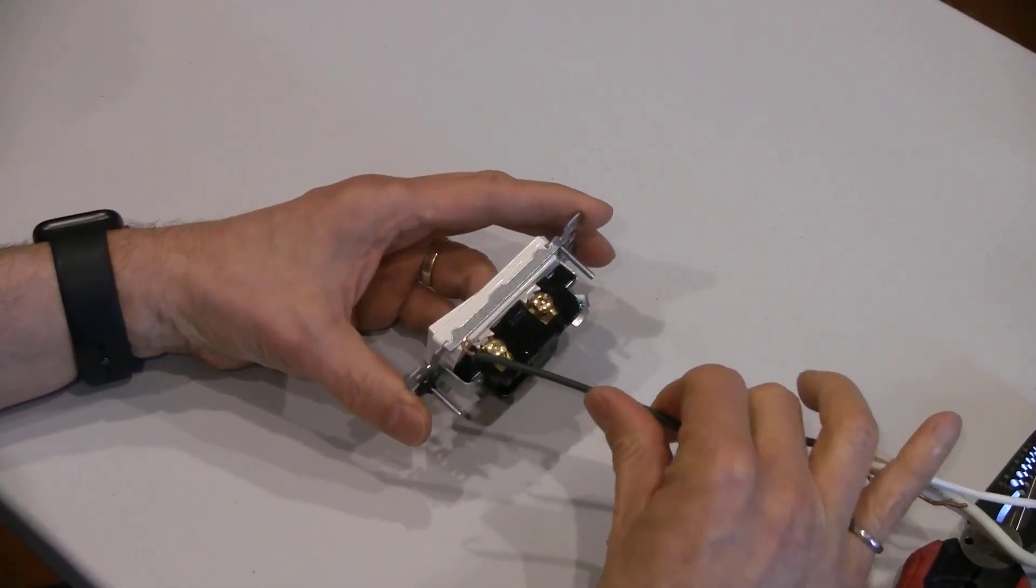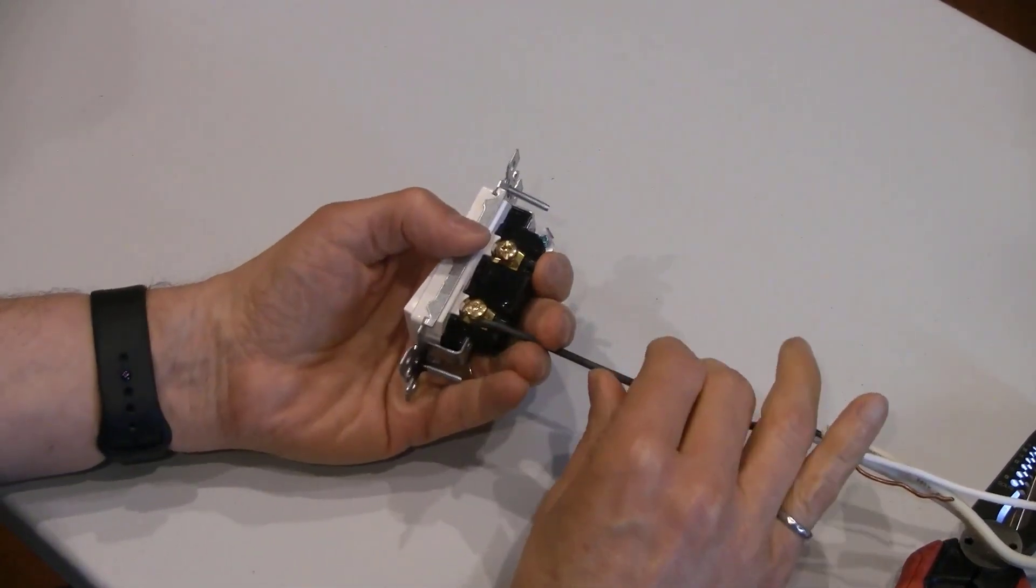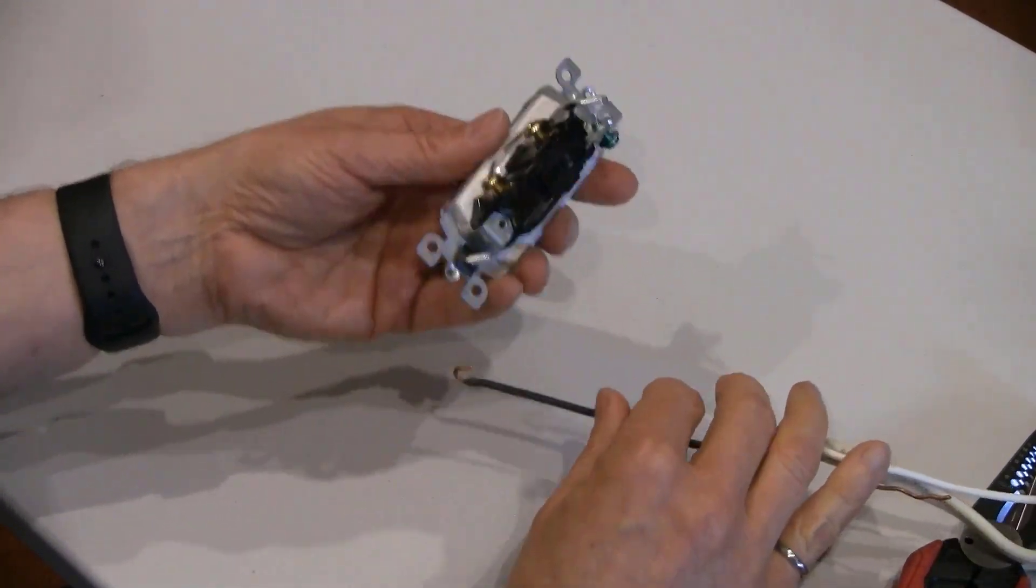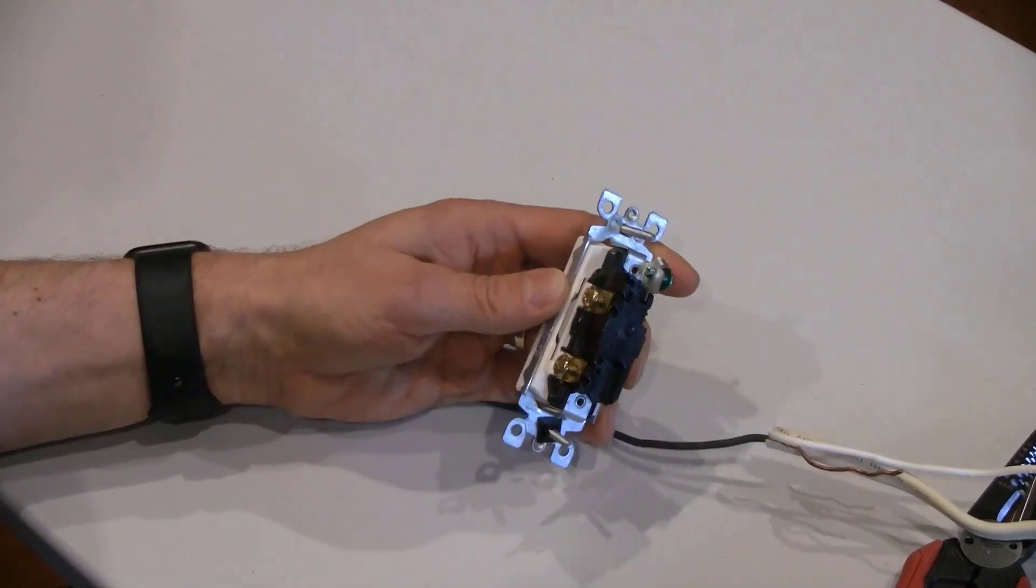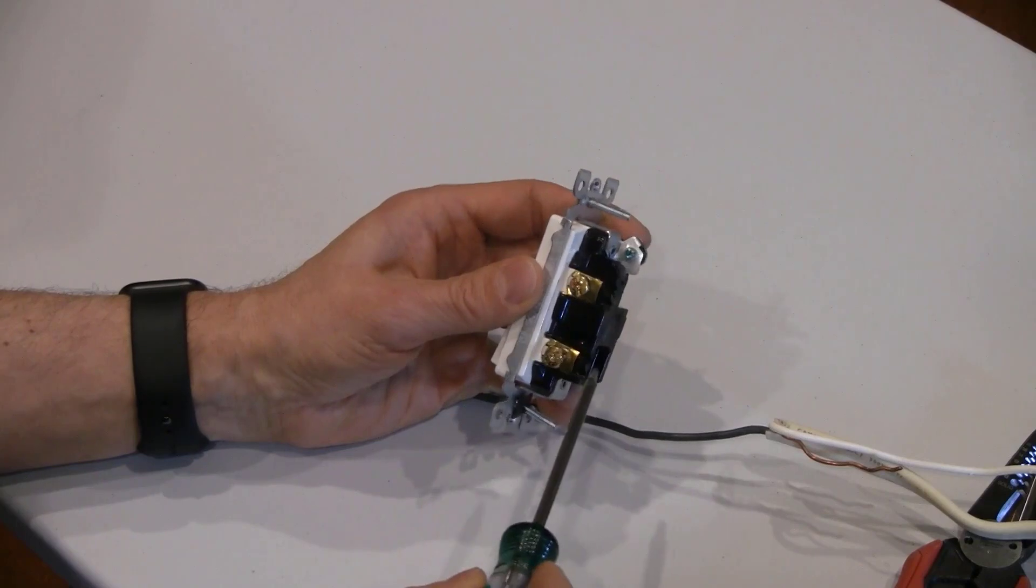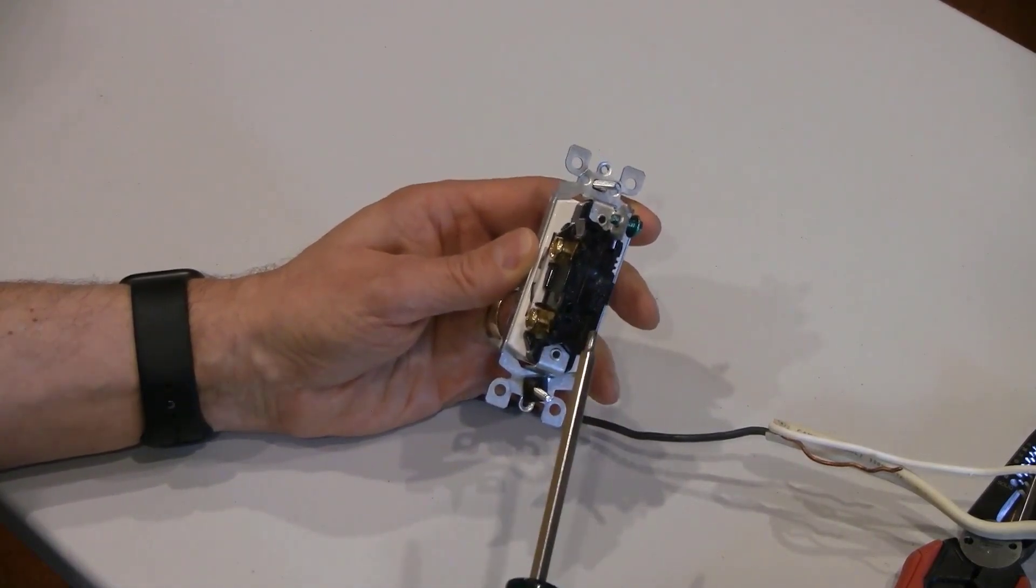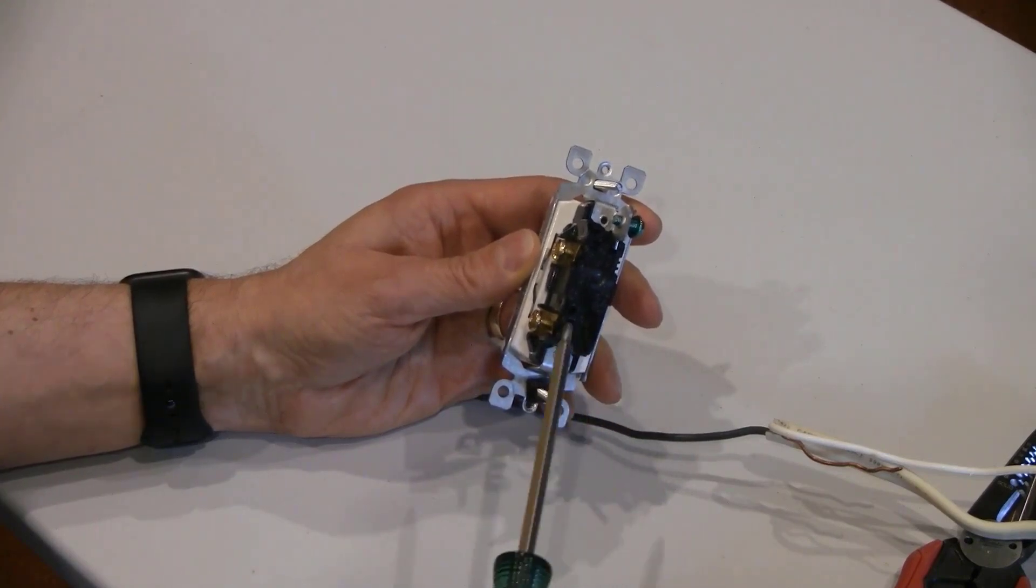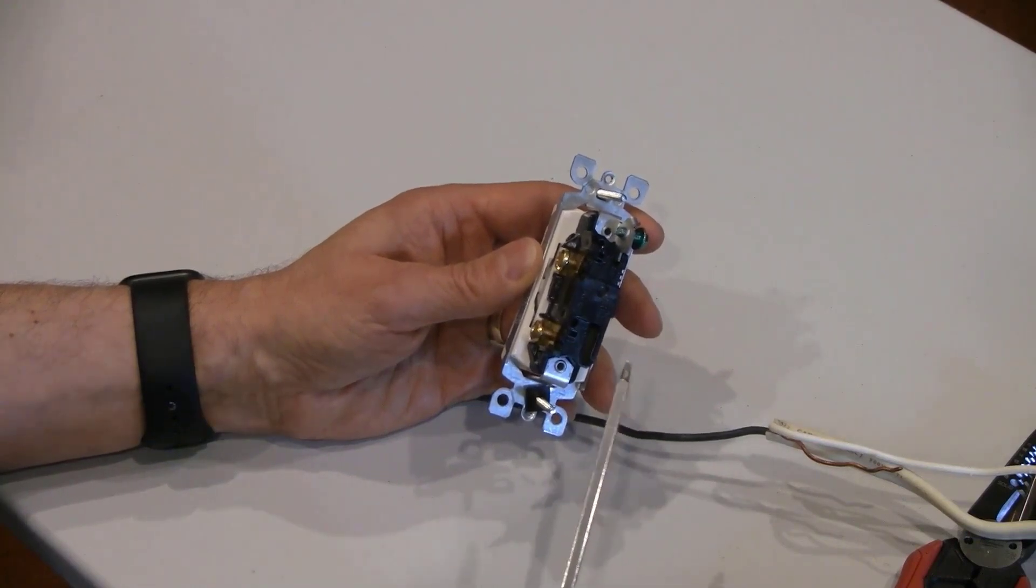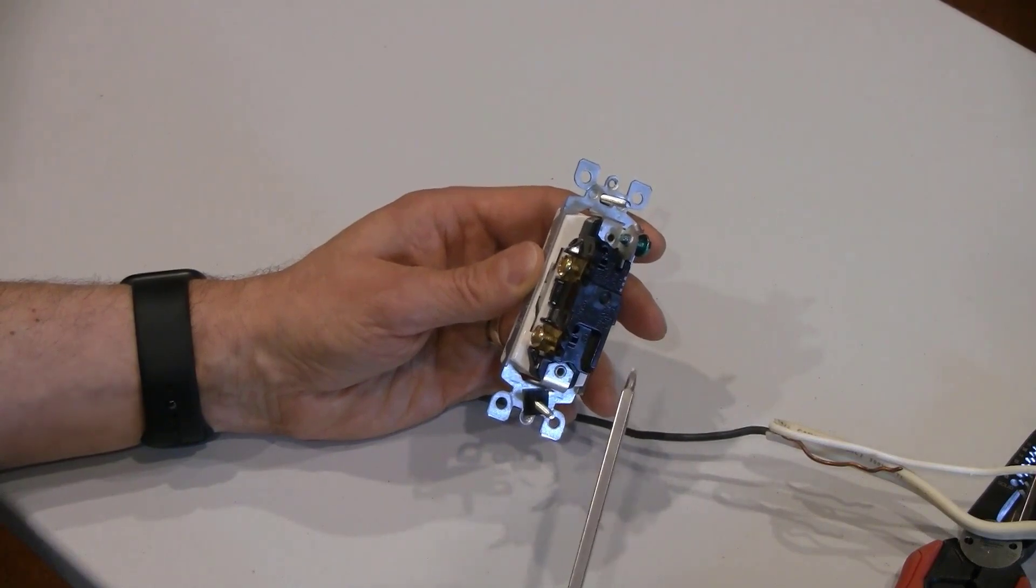Mistake number five is using a J-hook to connect to the terminal screw instead of using back wiring. Many current switches allow you to use back wiring. They have a little plate here that the terminal screw pushes against and allows you to put two wires in. If you have a wire bringing the power into this box and then you have a wire taking the power out to another switch or an outlet, you can put both wires in and avoid using a pigtail in the box.